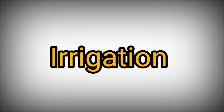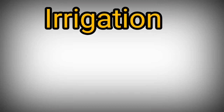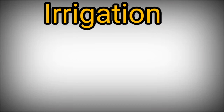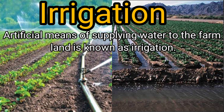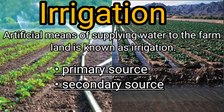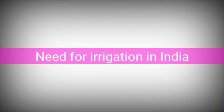The next topic is irrigation. Irrigation refers to the artificial means of supplying water to farmland. The sources of irrigation can be of two types: primary source, which is rainfall, and secondary sources, which include canals, wells, tube wells, etc.